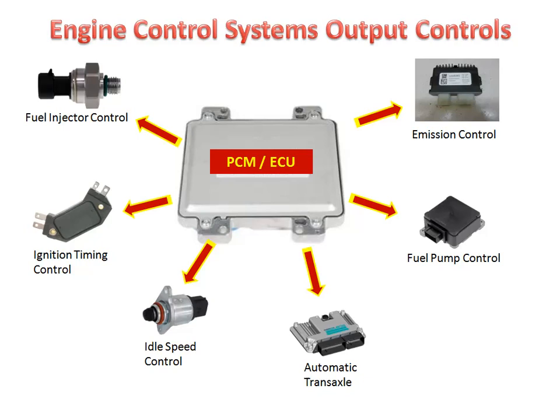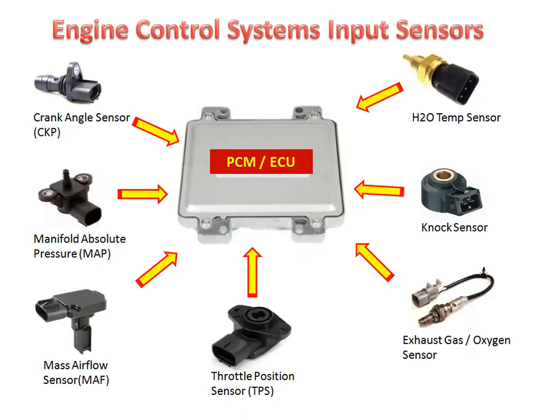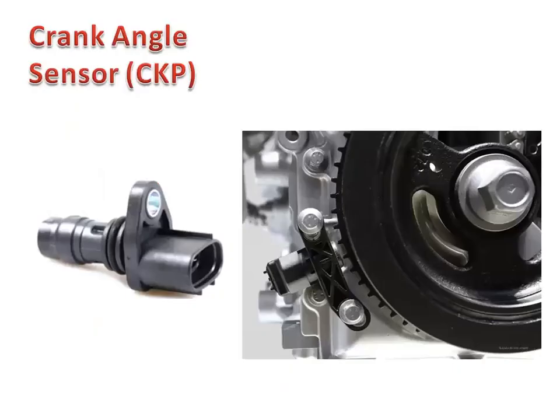A thorough understanding of input sensors provides the basis for fast, accurate diagnosis. If you do not understand input sensor operation and typical input sensor voltage signals, diagnostic procedures for these sensors are often time-consuming. The crank angle sensor, or CKP (crankshaft position sensor), is used to monitor the position of the crankshaft and its rotational speed, and forms the basis for controlling fuel injection, ignition timing, and other parameters.